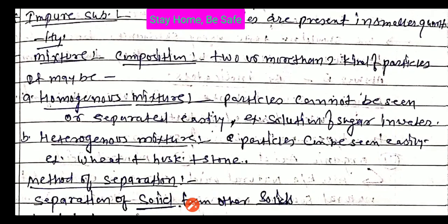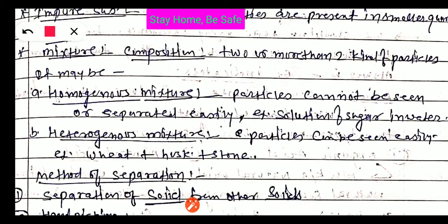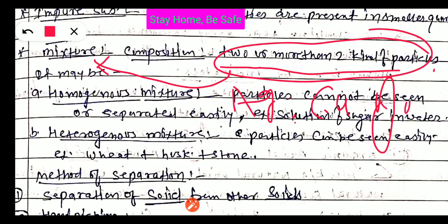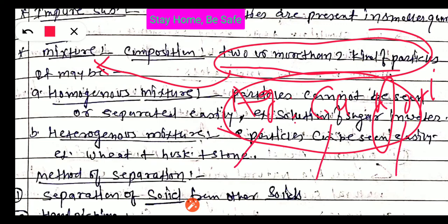Now, what is a mixture? Two or more than two kinds of particles when mixed together is called a mixture — like copper, aluminum, iron, gold, and silver mixed together. The composition of a mixture is not fixed. For example, silver, copper, and gold form a mixture, but the composition of silver, copper, and gold is not fixed.